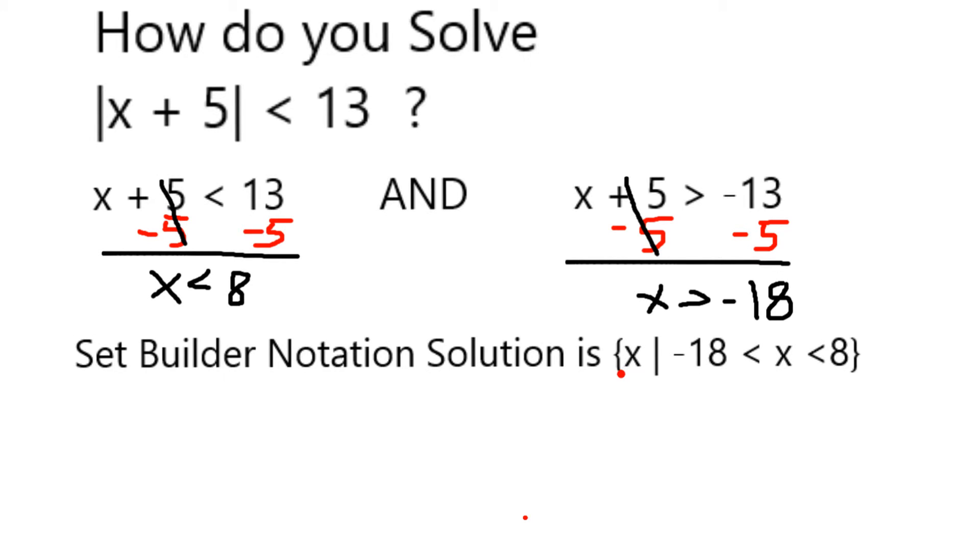So using something called set builder notation, the solution would be the set of all x such that negative 18 is less than x less than 8. In other words, x is between negative 18 and 8.